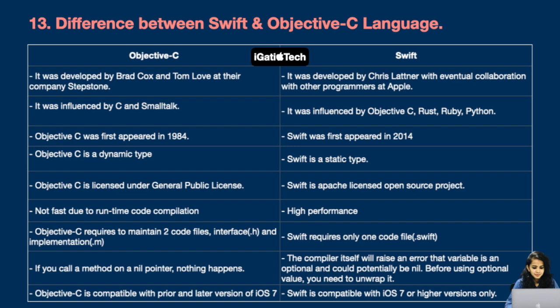Objective-C first appeared in 1984, whereas Swift first appeared in 2014. Objective-C is dynamically typed whereas Swift is statically typed. Objective-C is licensed under the General Public License whereas Swift is an Apache-licensed open source project. Objective-C is not fast due to runtime code compilation whereas Swift provides high performance. Objective-C requires two code files — one interface (.h) file and one implementation (.m) file — whereas Swift requires only one code file, the .swift file.